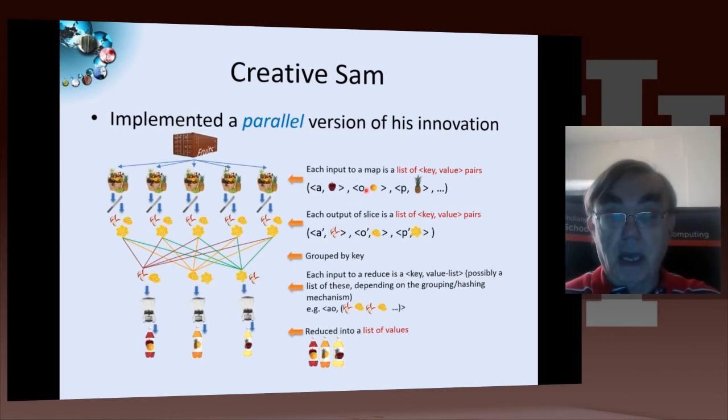Here's the map from the apples and oranges and pineapples to the slices. Then we group them together by the key, where the key is A'O'P', the sliced fruit, and then we deliver them to a blender, which, because we want to have some control over the taste, we blend each of the fruits separately. And so that's where we have these reduce functions here.